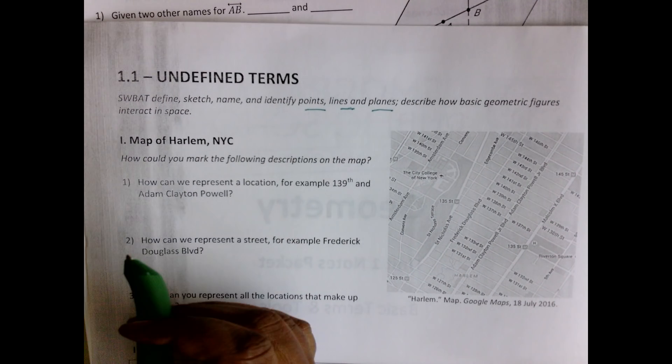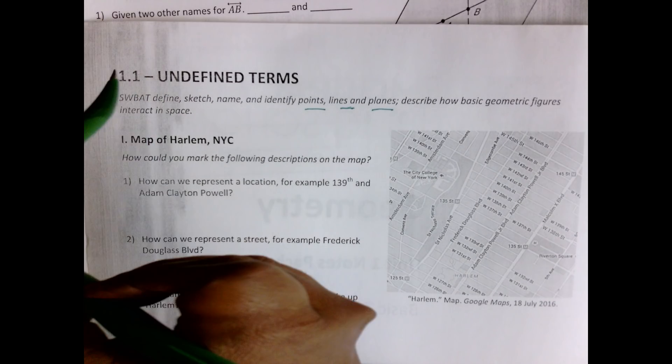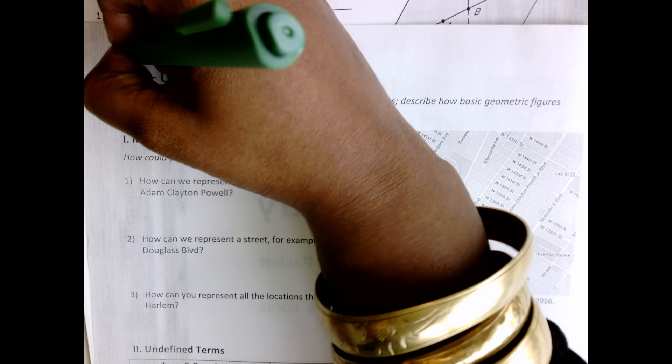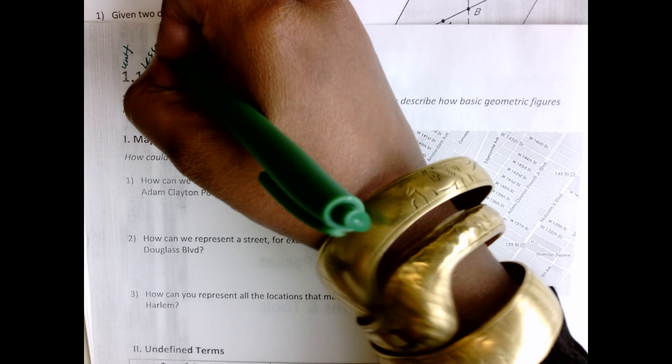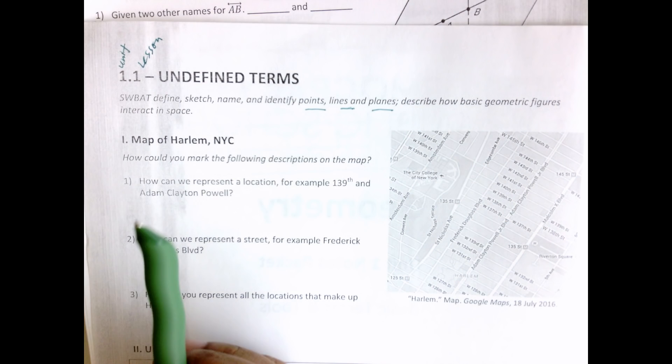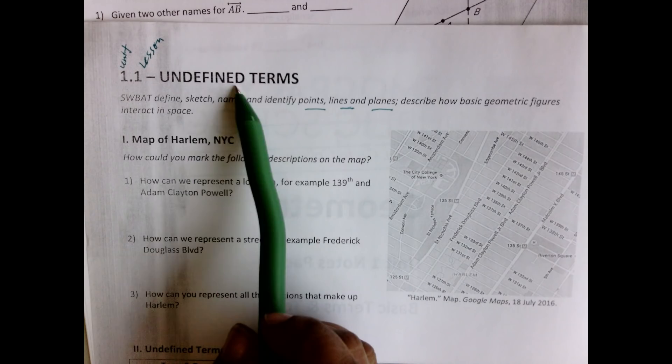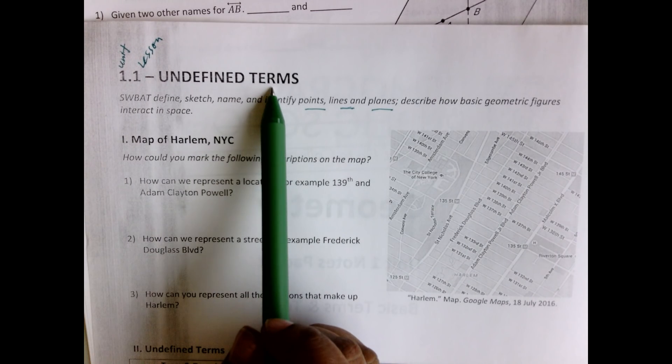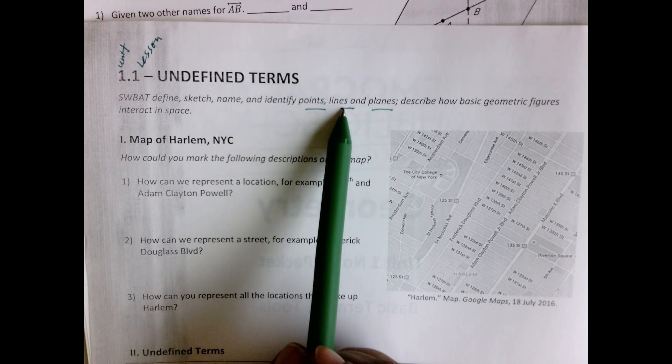Let's get started. That 1.1 tells us the unit—that one is the unit number, and this is the lesson. So 1.1 is Unit 1 Lesson 1, and the name of this lesson is Undefined Terms. Undefined terms represent or define objects that are the basis of more complex objects. In this case, your undefined terms are points, lines, and planes.